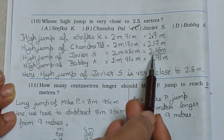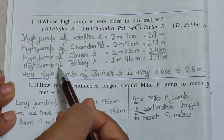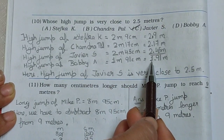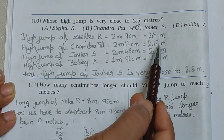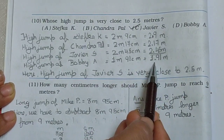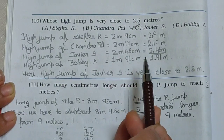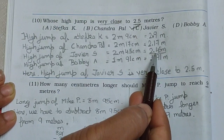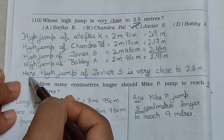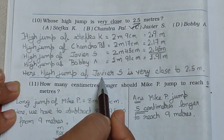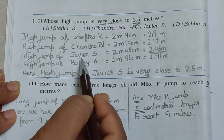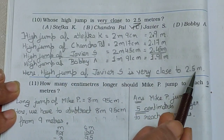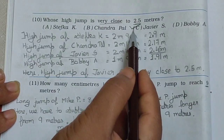If we convert into meters then we get 2.45 meter. Now high jump of Bobby A is equal to 1.91 meter. Converting into meters we get 1.91 meter. Now from this: 2.9, 2.17, 2.45, 1.91 meter — which one is very close to 2.5? Now see, 2.45 is very close to 2.5. So your answer is the high jump of Javios S — 2.45 meter. So here high jump of Javios S is very close to 2.5 meter, so option C is the correct one.